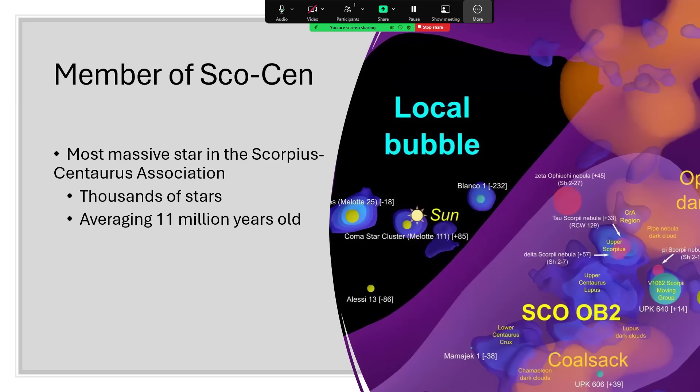And the Antares system is part of the Scorpius Centaurus Association, the Sco-Cen OB collection of bright stars, thousands of stars over in a very dense region away from the sun.